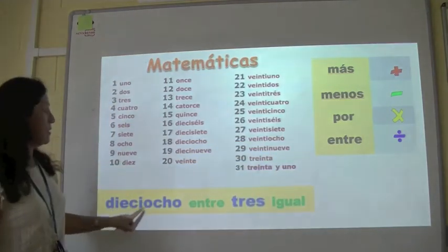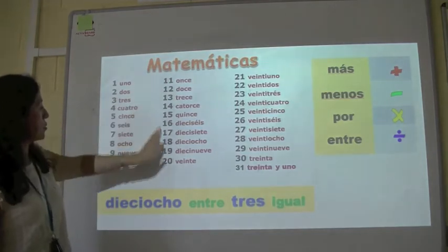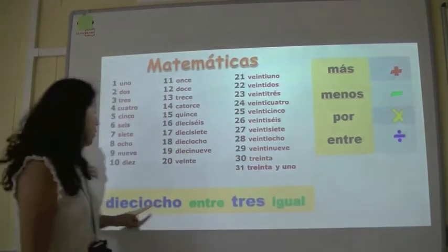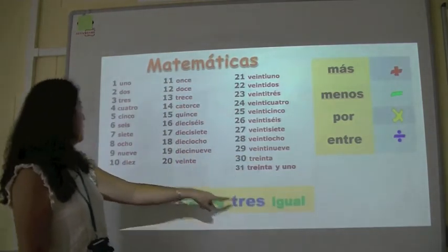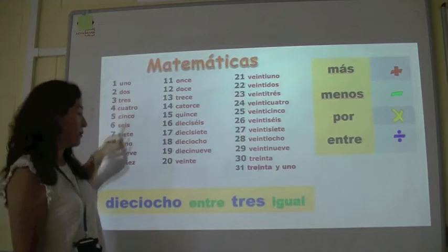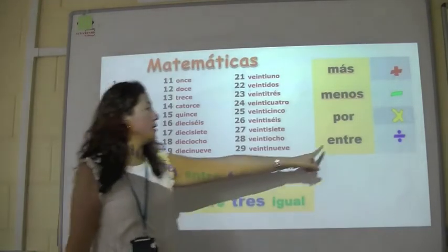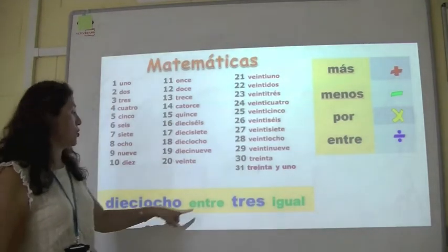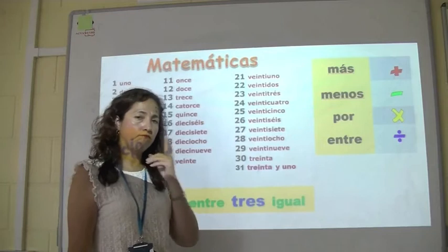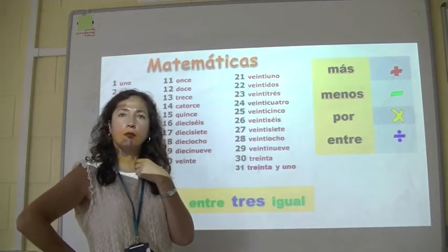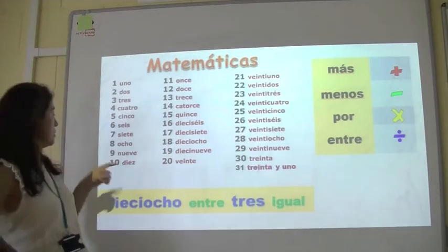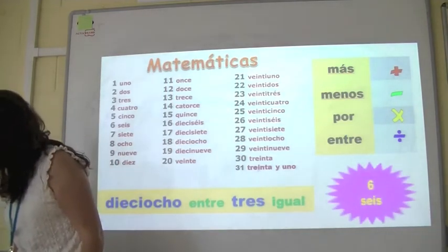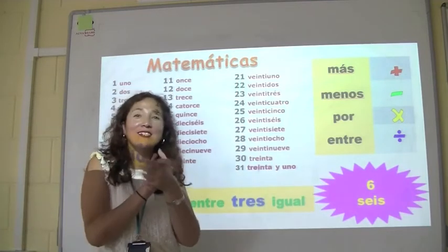For the last one: dieciocho entre tres — eighteen divided by three. Dieciocho entre tres, igual — seis! Seis, seis, seis. Muy bien! Fantástico. Gracias señor Gallagher — he's really helped a lot here.